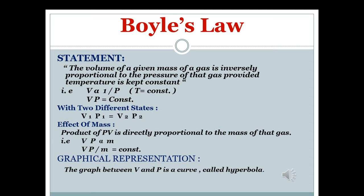Now we discuss Gas Laws. Boyle's Law states: the volume of a given mass of gas is inversely proportional to the pressure of that gas, provided the temperature is kept constant. Here volume and pressure — two parameters — are used while temperature is kept constant. So volume V is inversely proportional to one over pressure, keeping temperature constant.